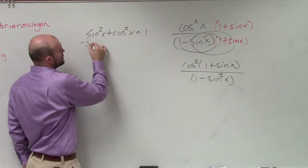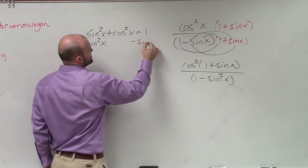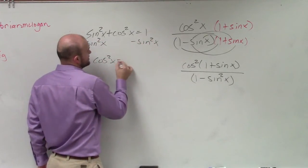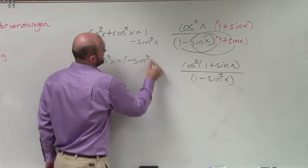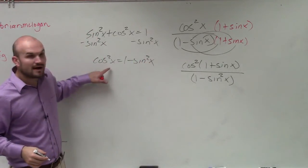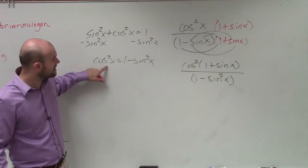So if I subtract sine squared of x on both sides, I have cosine squared of x equals 1 minus sine squared of x. So now, I can rewrite this as cosine squared of x.